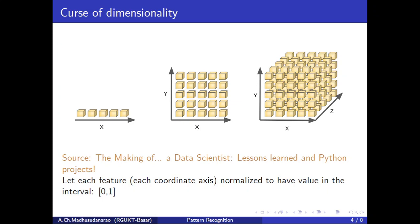Let's look into the Curse of Dimensionality. When we use the histogram method to find the probability density functions for the likelihood functions — for example, if we normalize our feature to the 0-to-1 interval and divide it into 5 parts (0–0.2, 0.2–0.4, 0.4–0.6, 0.6–0.8, 0.8–1) — we have 5 partitions and need to estimate 5 parameters when d=1.